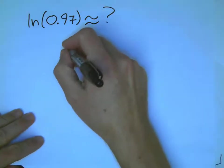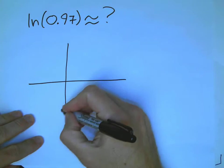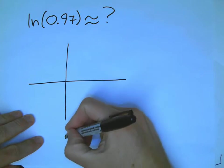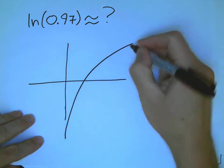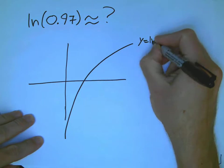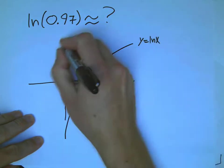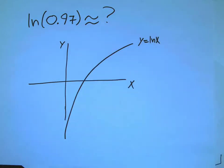So, we want to get the idea again. I showed you the idea in class, but here's y equals ln x. And what we're going to do is we're going to recognize that 0.97 is really close to 1.